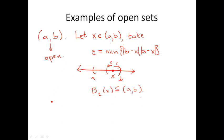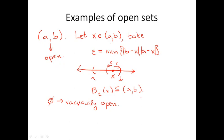What are some other examples of open sets? An example is the empty set. We say that this is actually vacuously open. The definition of openness says for all elements of a set some criterion is satisfied, but since there are no elements of the empty set, it's trivially true that it's open. So the empty set is open.